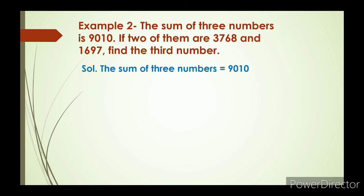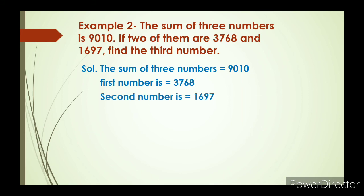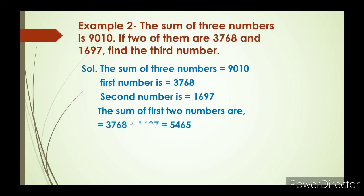Solution: the sum of the three numbers is 9010. The first number is 3768 and the second number is 1697. We add these two numbers; the sum of the first two numbers is 5465.